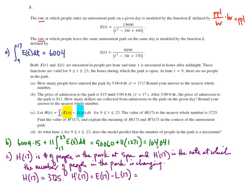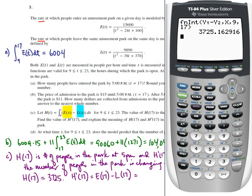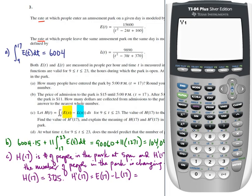So we'll go back to the calculator. We have our two functions, y1 which is e of t, y2 which is l of t. So I can do this. Go back to the home screen, clear, and I want to do vars yvars function y1 of 17 minus vars yvars function y2 of 17, and I would get negative 380 rounded to the nearest person.